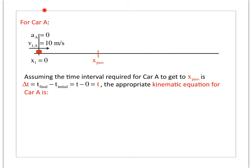What's going on with car A? Well, assuming that the time that it takes for car A to go from the origin out to the pass point is delta t, and assuming that the initial time is when the stopwatch starts, which is at t equal to zero, we can write that delta t is simply equal to t. So the question arises, what kinematic equation do we have that's going to end up having time in it, coordinates initial and final, an initial velocity, and an acceleration? And the answer to that question is this little gem.